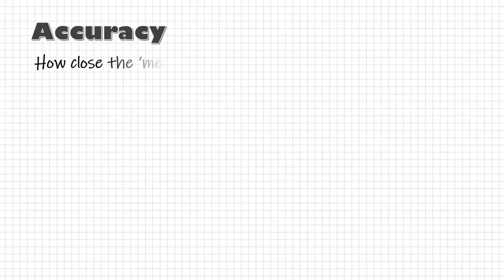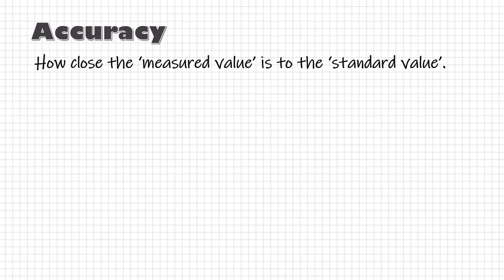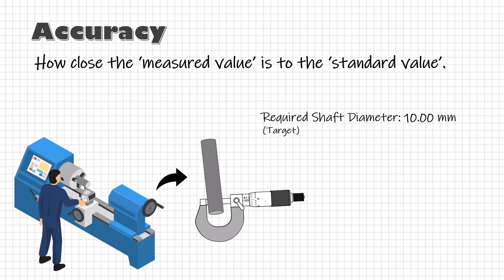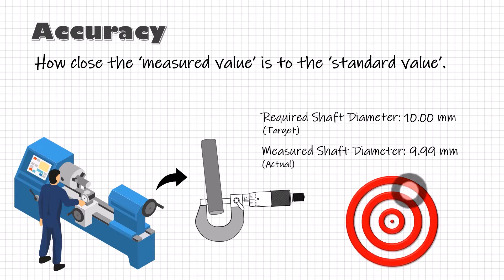Accuracy is how close the measured value is to the standard value, or the true value. For example, if I make a shaft of 10 mm diameter, then on measurement, how close the actual value is to 10 mm. The closer my measured value is to 10 mm, the more accurate my process is.